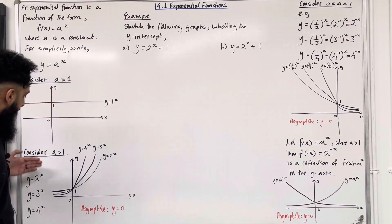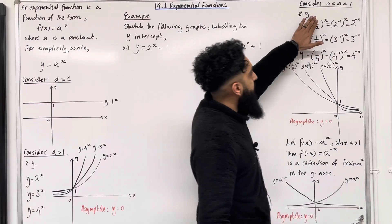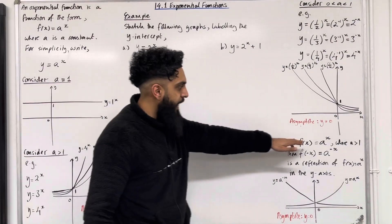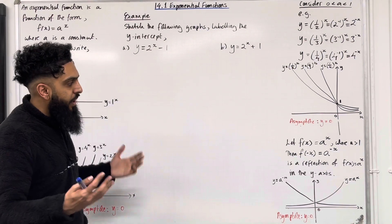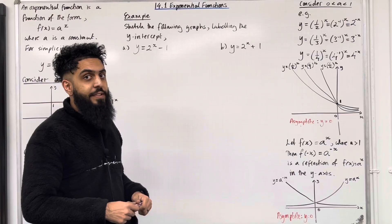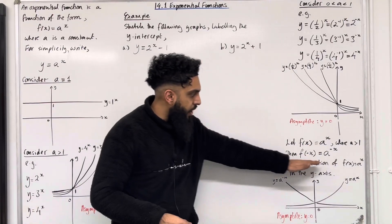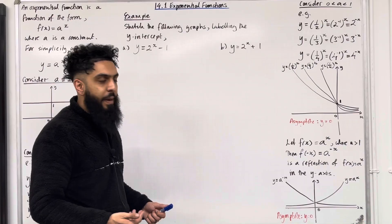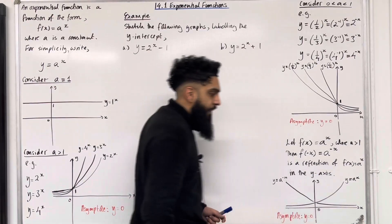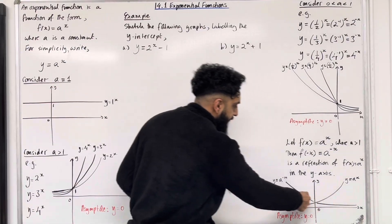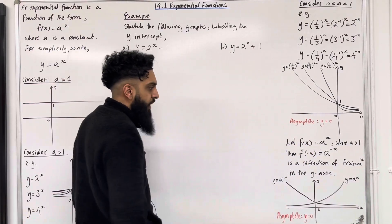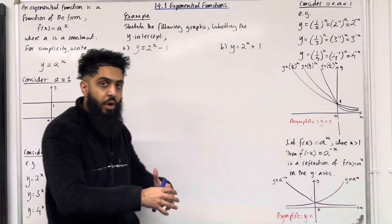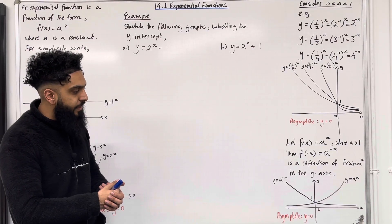Notice that for a > 1 we have f(x) = a^x, and for 0 < a < 1 we rewrote the equations so that a becomes greater than 1. Let f(x) = a^x where a > 1. Then f(−x) = a^(−x), which is a reflection of f(x) = a^x in the y-axis. So I know the shape of y = a^x when a > 1; if I reflect that graph in the y-axis I get a^(−x). Substituting x = 0 into both equations gives a y-intercept of 1. Both curves do not cut the x-axis, hence the equation of the asymptote is y = 0.